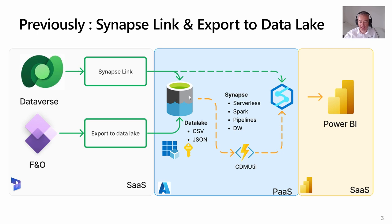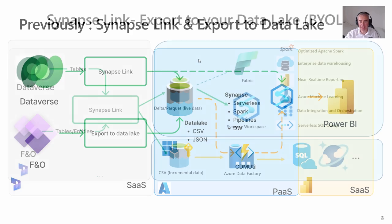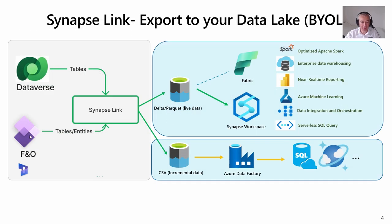The CSV files are transformed using the Spark Pool, which is another service within Azure Synapse. This materializes the tables that can then be used for data warehousing, Power BI reporting, or anything else. The good news is that the CSV files, whether coming from Export to Lake or Dataverse, are very similar. So for customers who just want to keep the existing architecture, the changes will not be big.